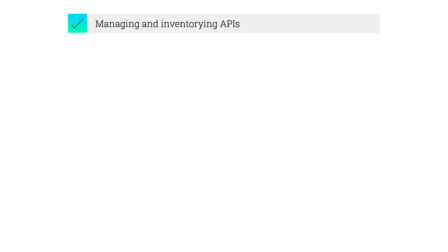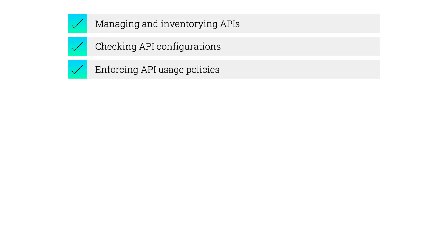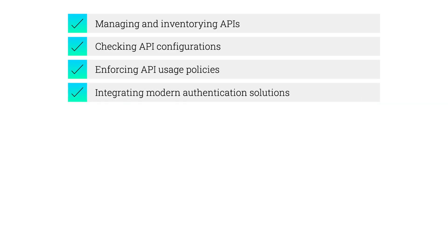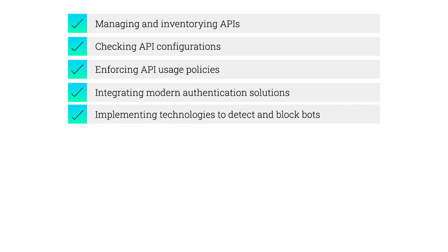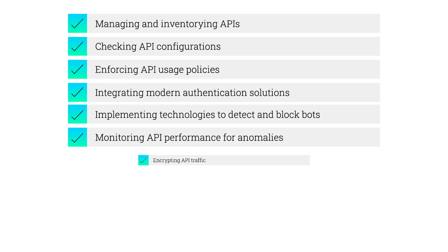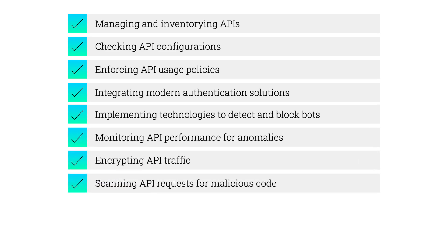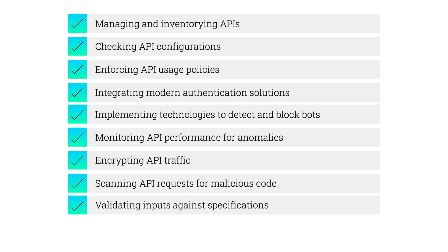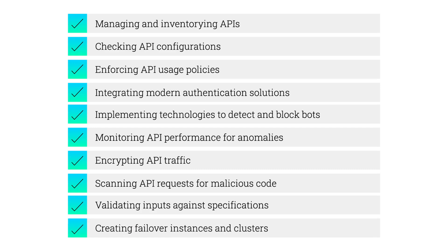Fortunately, there are measures to mitigate the risk of API abuse. API management and security solutions offer countermeasures to prevent these attacks. Implementing best practices can significantly reduce the vulnerability of APIs to abuse. These include managing and inventorying APIs to prevent abuse of forgotten or unmonitored APIs, regularly checking API configurations to address vulnerabilities, enforcing API usage policies, integrating modern authentication solutions with identity and access management systems, implementing technologies to detect and block bots, monitoring API performance for anomalies, encrypting API traffic, scanning API requests for malicious code, validating inputs against specifications, and creating failover instances in clusters for improved reliability.